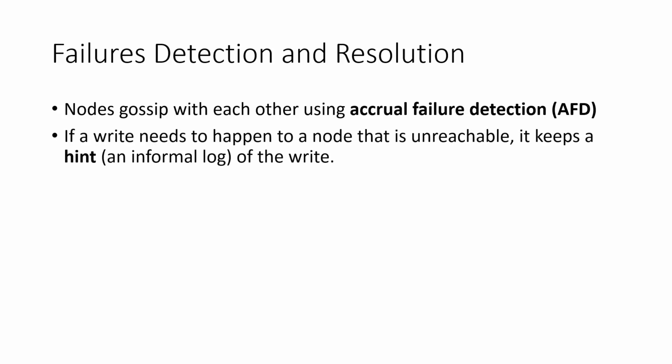Now we'll look at failure detection and resolution in Cassandra. The nodes communicate with each other all the time using a special gossip protocol known as the accrual failure detection or AFD. If a write needs to happen to a node that's unreachable and it is supported by the current consistency model—that is, it's either a QUORUM or less—then the node that received the write request can keep a hint of that write. A hint can be regarded as an informal log or a message indicating that a write operation was received on this key with this new value. If and when the node that failed recovers, the hints are then forwarded for that node to catch up.